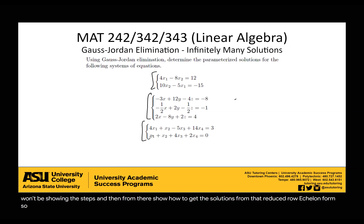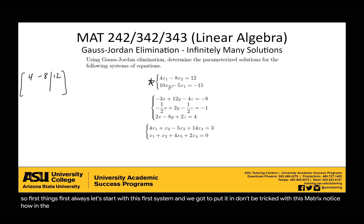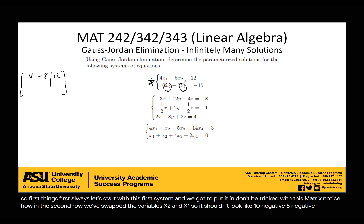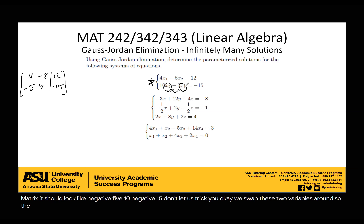First things first, let's start with this first system, and we've got to put it into matrix form. Don't be tricked with this matrix — notice how in the second row, we've swapped the variables x2 and x1. So it shouldn't look like 10, negative 5, negative 15 in the matrix. It should look like negative 5, 10, negative 15. We swap these two variables around, so the coefficients should be swapped.